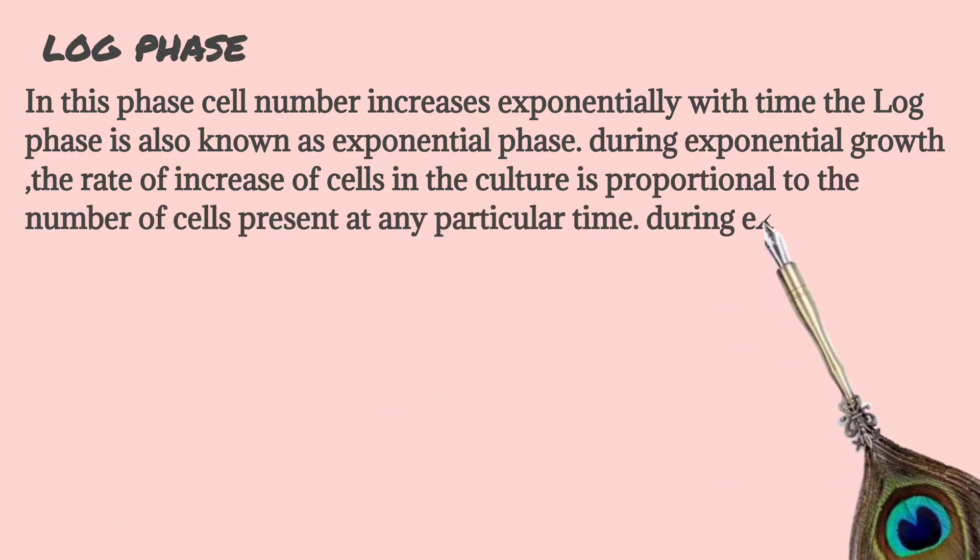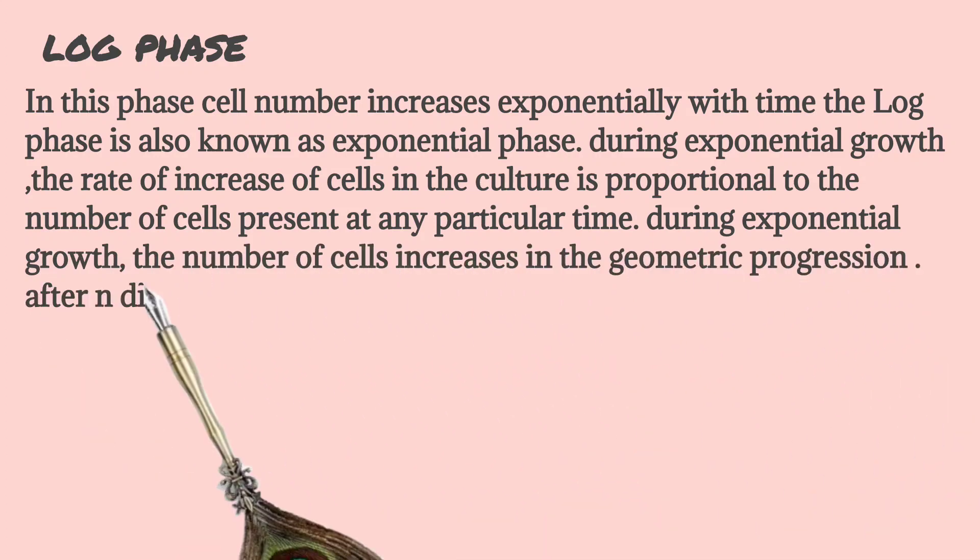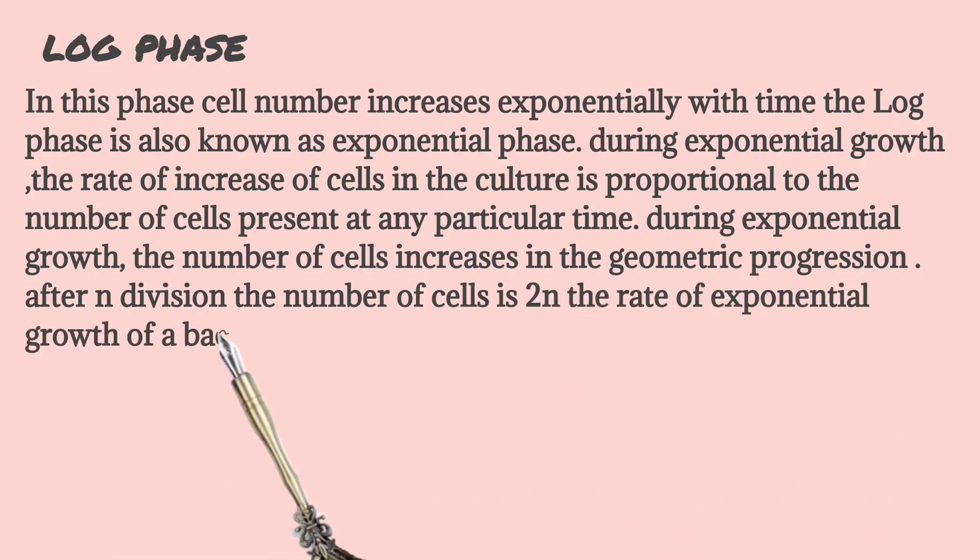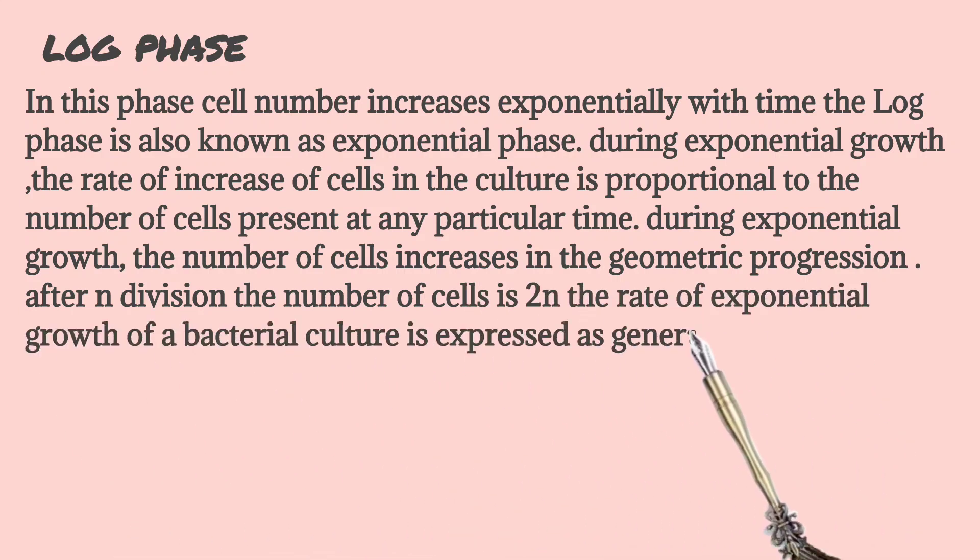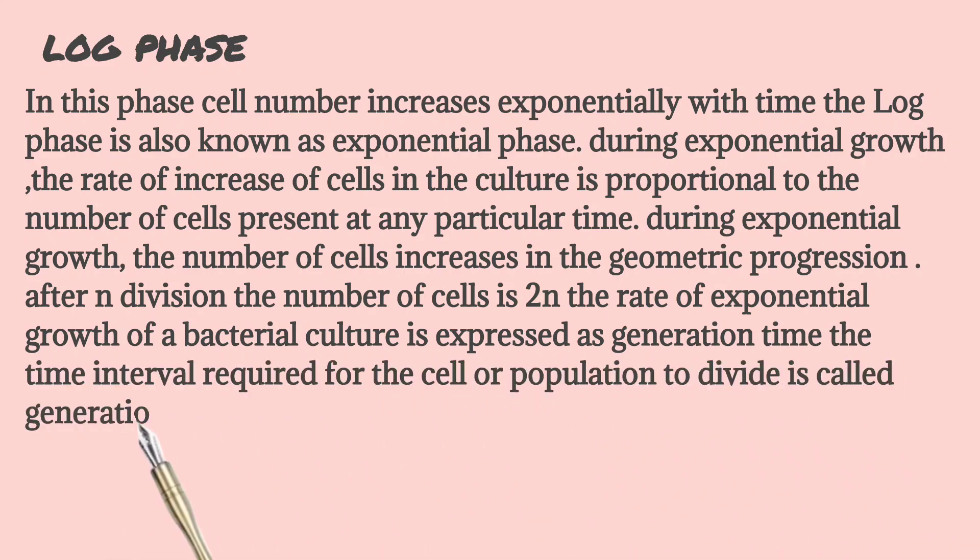During exponential growth, the number of cells increases in geometrical progression. After n divisions, the number of cells is 2^n. The rate of exponential growth of the bacterial culture is expressed as generation time. The time interval required for the cell to divide is called generation time or the doubling time.